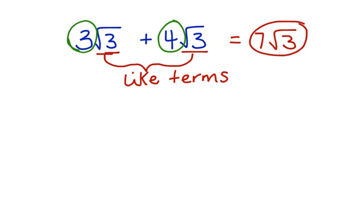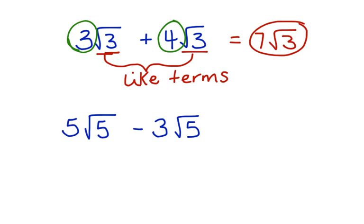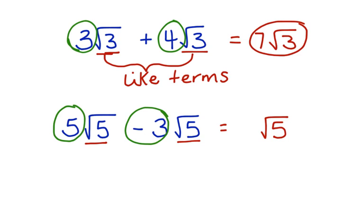Here's another one. We have 5 square roots of 5 minus 3 square roots of 5. Again, these square roots of 5 are alike — those are our like terms. We bring the square root of 5 into our answer. Now we have 5 take away 3, which is 2. So 2 square roots of 5 is our solution.